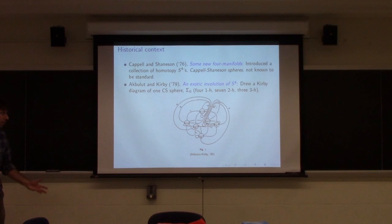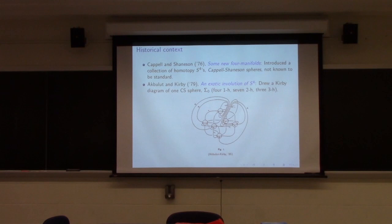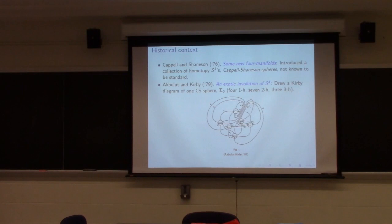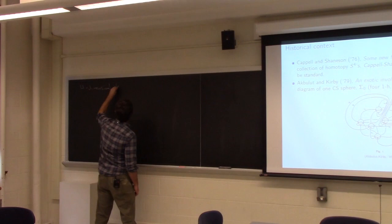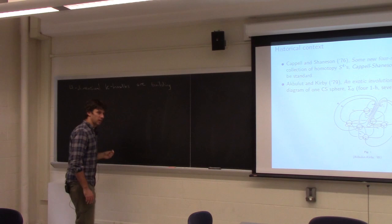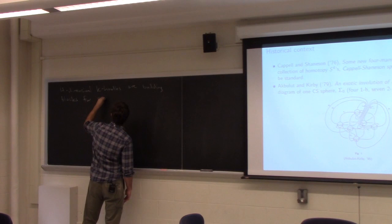In 1979, Akbulut and Kirby looked at a few of these and drew a Kirby diagram for one called sigma sub-zero. For those who don't think about four-dimensional topology: four-dimensional k-handles can be used as building blocks for smooth four-manifolds. Each k-handle is diffeomorphic to a four-ball, but the k-parameter tells you how they're glued together.